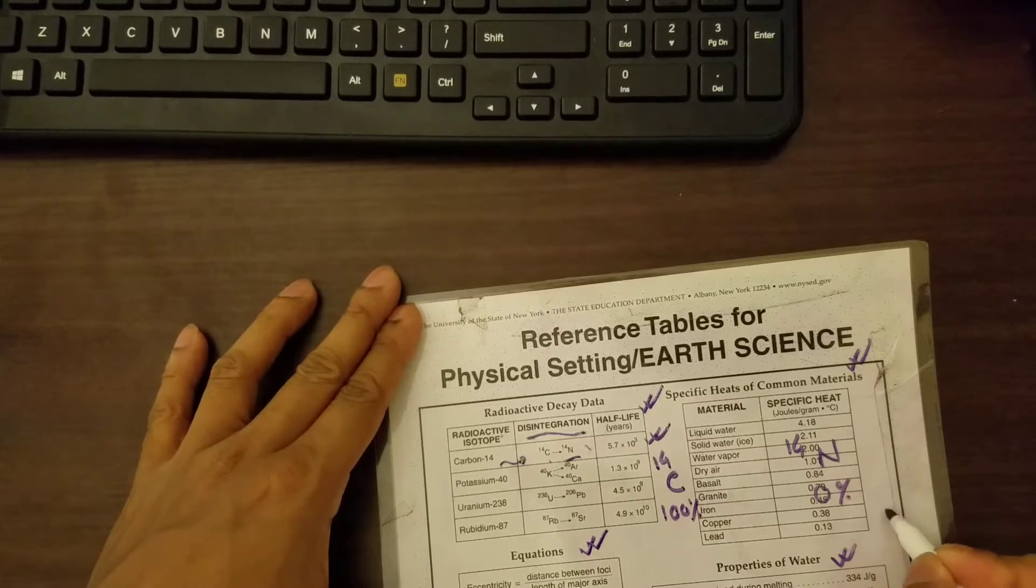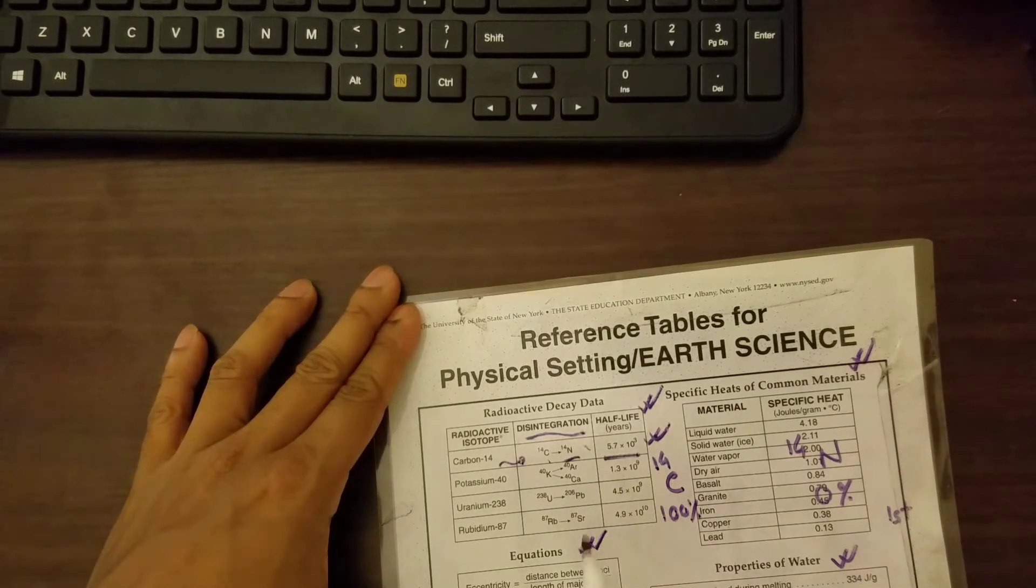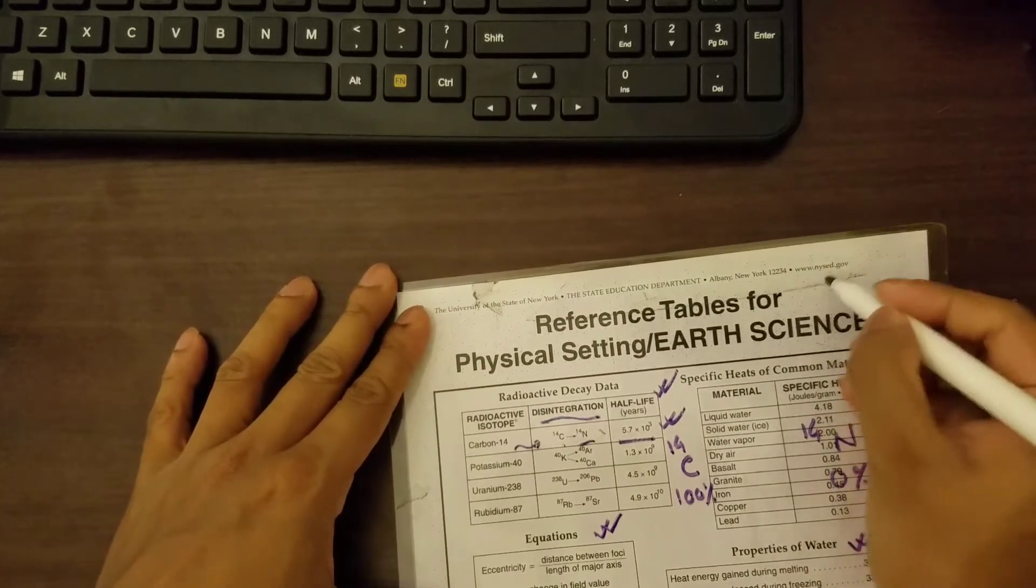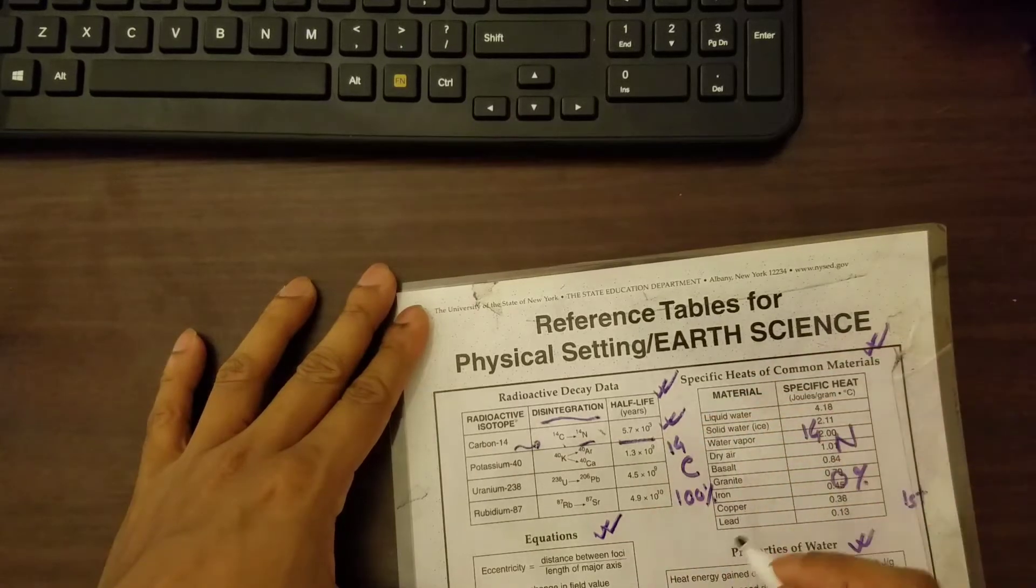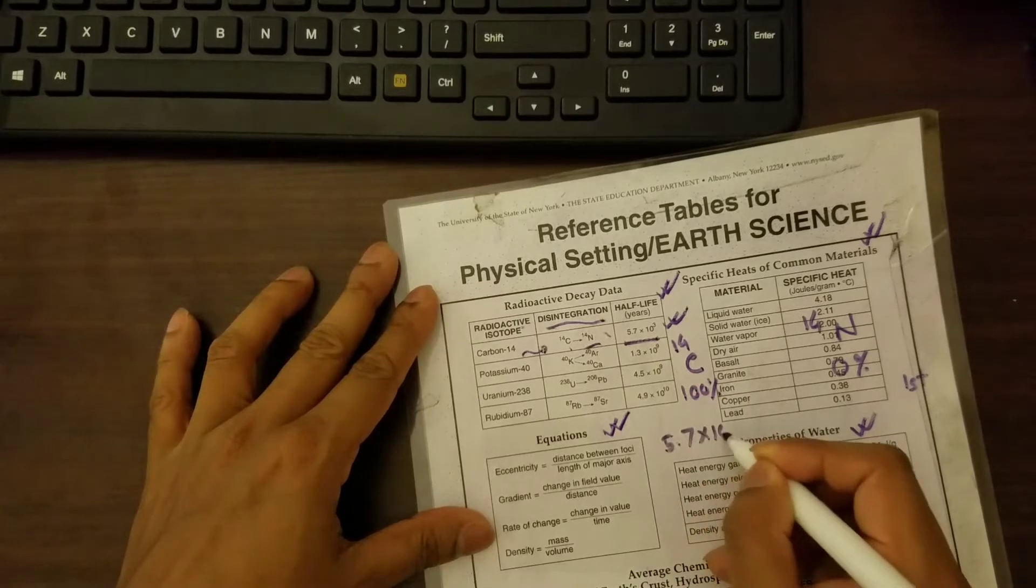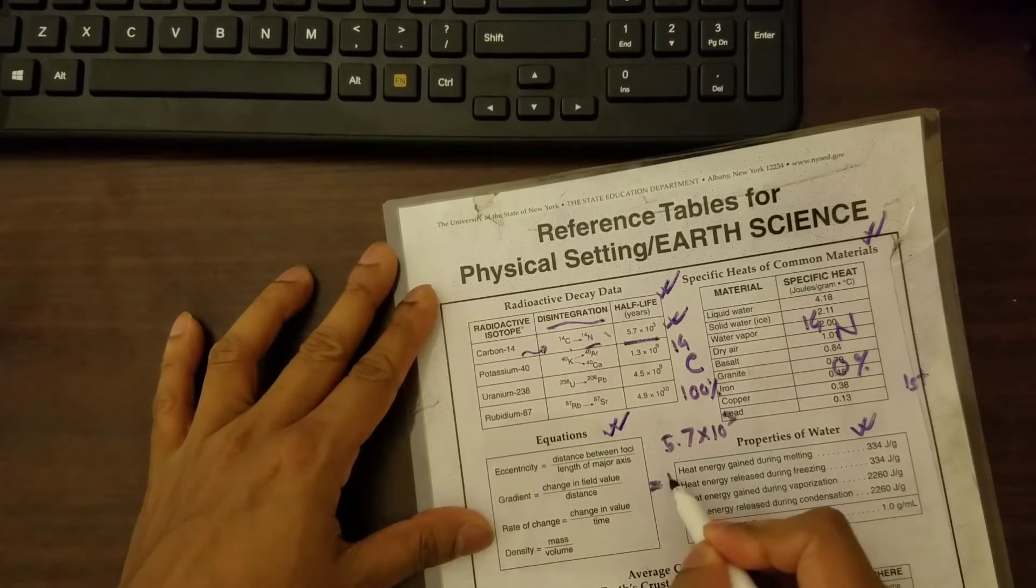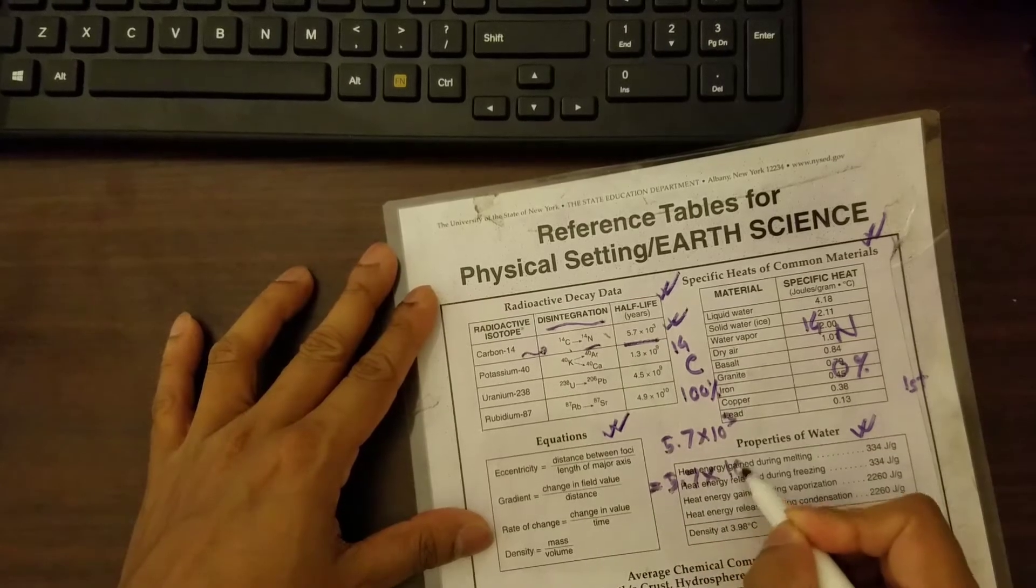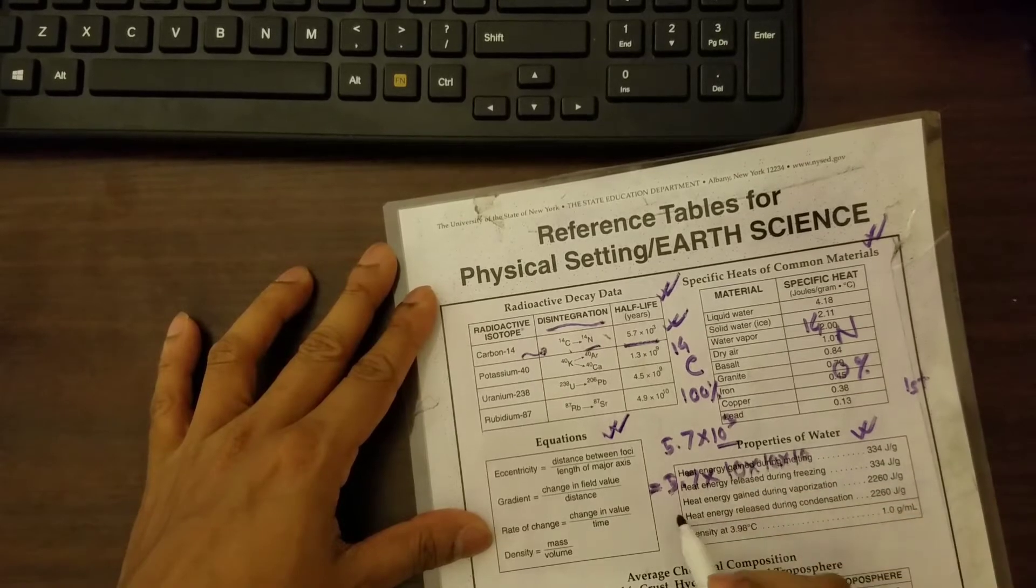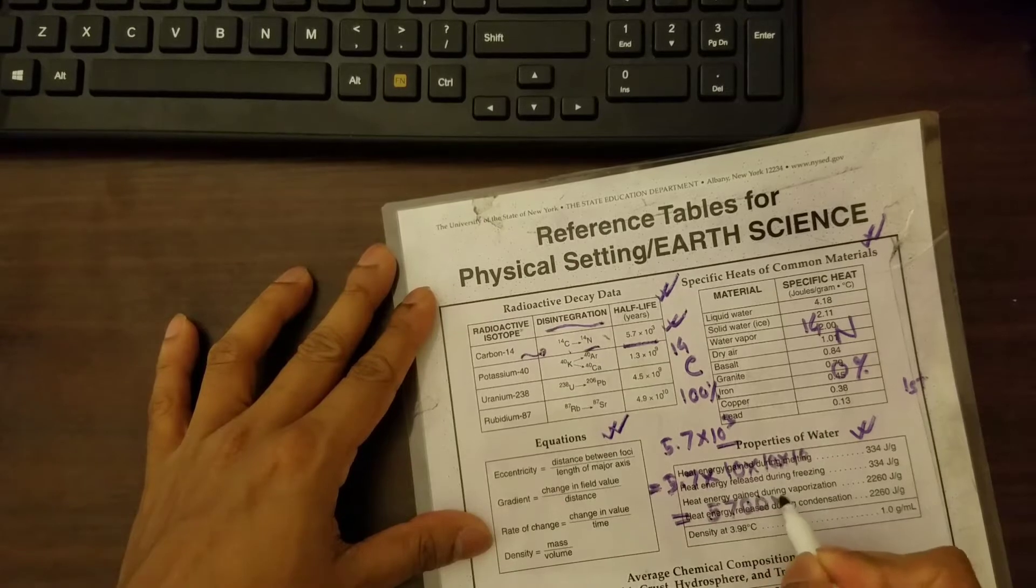After the first half-life, which you can see is 5.7 times 10 to the power 3. So if we break it down, this really means 5.7 is multiplied by 10 times 10 times 10. That is 10 to the power 3. If you do the multiplication, you'll get 5,700 years, which is the half-life.